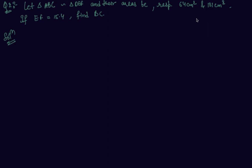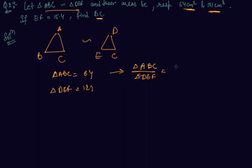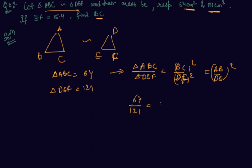Here is one more example in which we are given the ratio of the areas of two similar triangles. These two triangles are similar and we have to find a side. I am drawing triangles ABC and DEF. These two triangles are similar to each other. We are given the area of triangle ABC is 64 and area of triangle DEF is 121. From the area proportion theorem: area of triangle ABC upon area of triangle DEF equals BC² upon EF² or AB² upon DE².